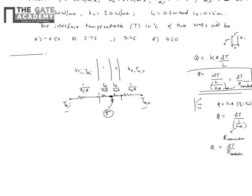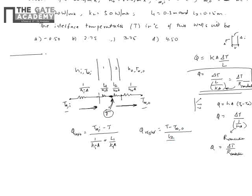We want the interface temperature T. Since it's a series network, the heat flowing from T∞_i to T equals the heat flowing from T to T∞_o. We equate: (T∞_i − T) / [1/(h_i·A) + l1/(k1·A)] = (T − T∞_o) / [l2/(k2·A) + 1/(h_o·A)]. This gives us the interface temperature.